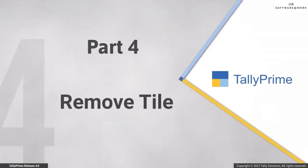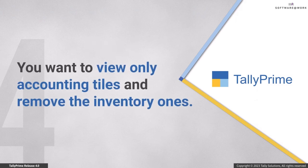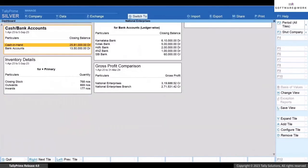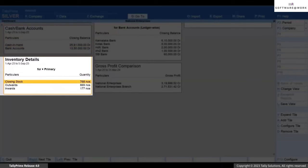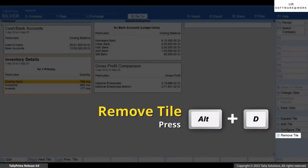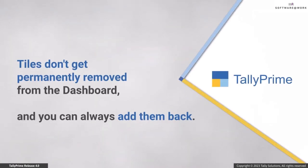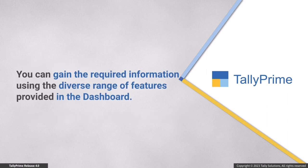Now let's see how to remove a tile from the dashboard. Consider that as a finance manager you want to view only the accounting tiles and not the inventory tiles. Bring the cursor to an inventory tile that you do not want to view and press Alt+T to remove the tile. The tile gets removed. The best part is that you can always add the tile back — tiles never get permanently removed unless you save the view with them removed. As you saw, Dashboard comes with a diverse range of features to help you gain the required information. Thank you.